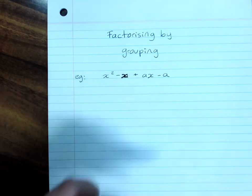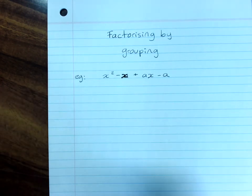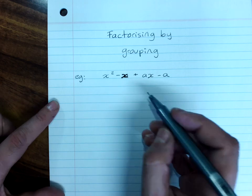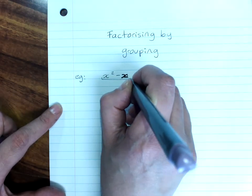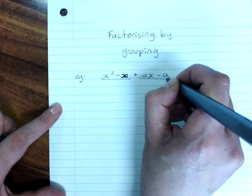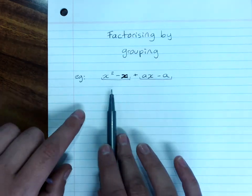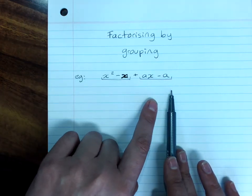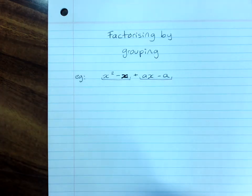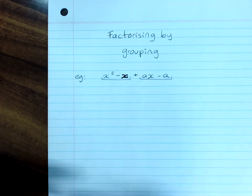When you see four terms like this you're really suspecting that you might want to be factorizing by grouping. Have a look and see if you can group them into two pairs, preferably in the order they're in, but you could rearrange them. If you wanted you'd still get the same answer.